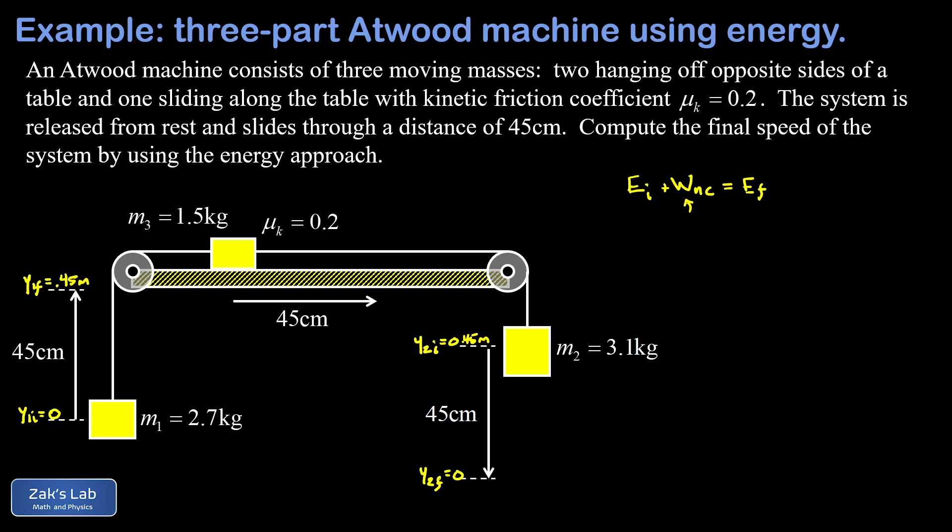Now looking at the sliding mass, it experiences a friction force to the left mediated by the normal force. We need to figure out what's going on in the vertical direction first. In the vertical direction we have gravity pulling down with magnitude m3 times g, and the normal force pushes up. The normal force is doing whatever it has to cause the perpendicular forces to sum to zero, so it's simply m3g pointing up. The friction force is f_k, which we can write as mu_k times the normal force. As the block slides to the right with friction pointing left, we get negative work done by friction that reduces the total energy.